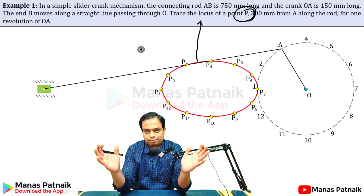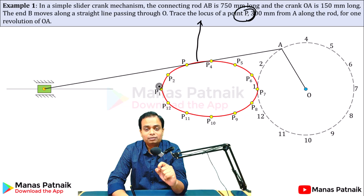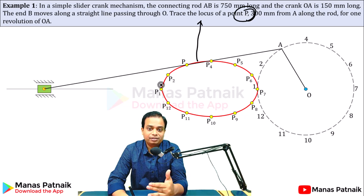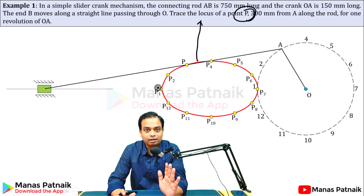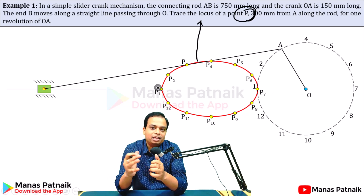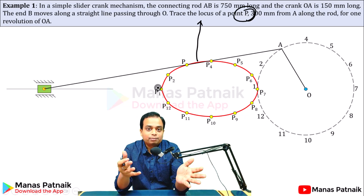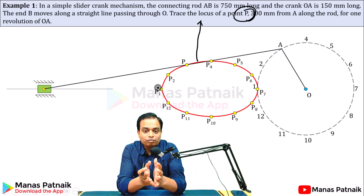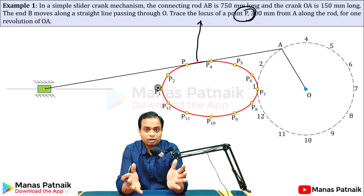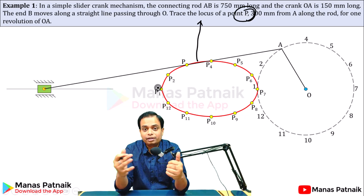In today's world of technology, all of these things can be accomplished on a CAD software — you just create all the parts separately, assemble them together, mark the point, and its locus can be created very easily. But since we are beginning this chapter and dealing with engineering graphics on a piece of paper, it becomes my responsibility to explain from the fundamentals how all of these things work out.